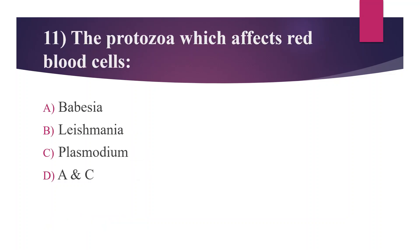Eleventh question: The protozoa which affects red blood cells — option A. Babesia, option B. Leishmania, option C. Plasmodium, option D. A and C. The answer is option D, Babesia and Plasmodium. Both infect red blood cells and are included in subphylum Sporozoa. Leishmania is placed under subphylum Sarcomastigophora.